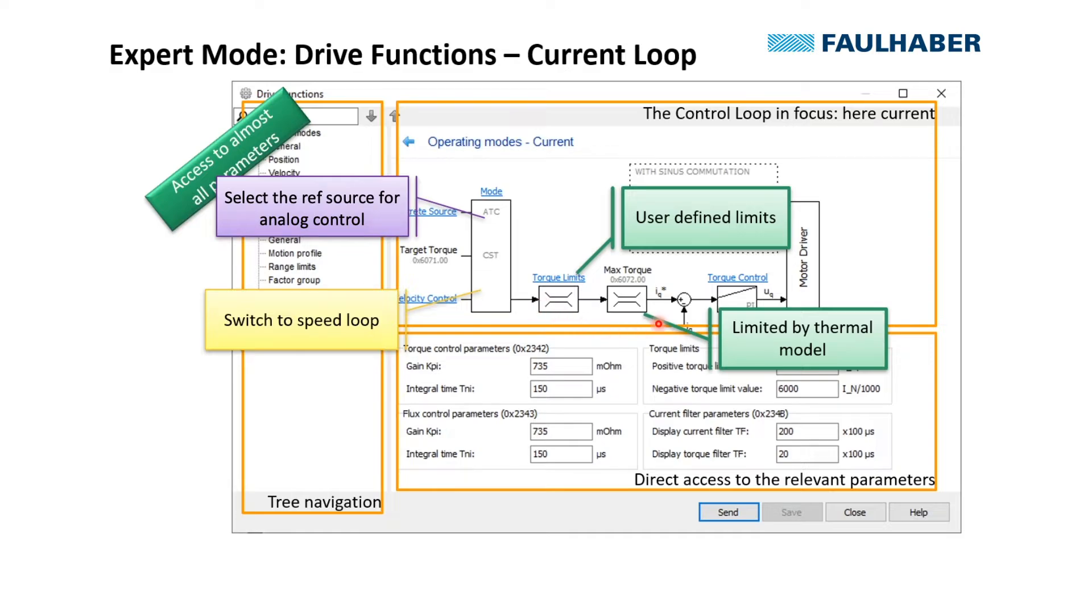The limited current here is out of the thermal model, so a higher peak current or torque is allowed when the motor is relatively cool. When it's heating up, we might limit the torque to the continuous one that has been configured in the driver.